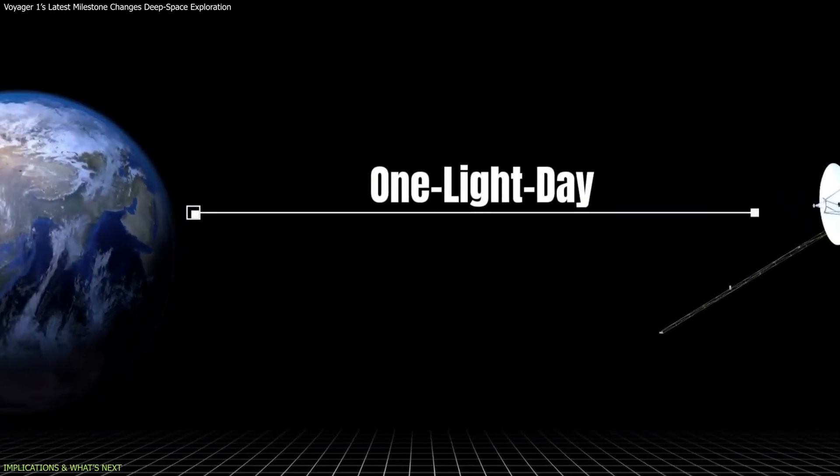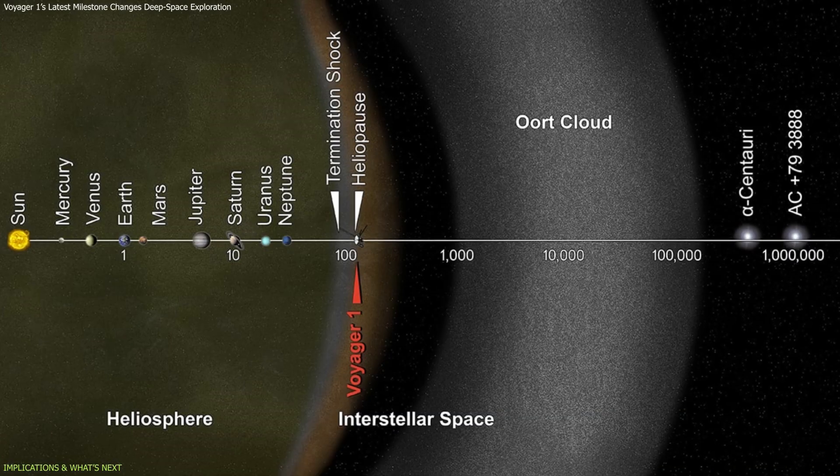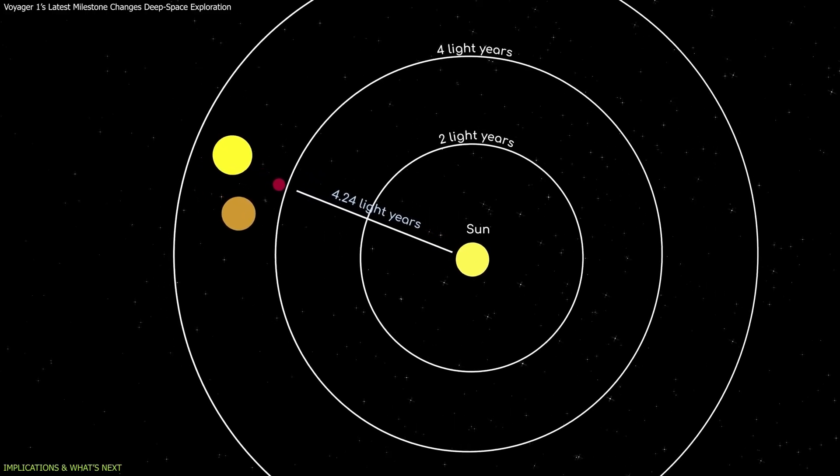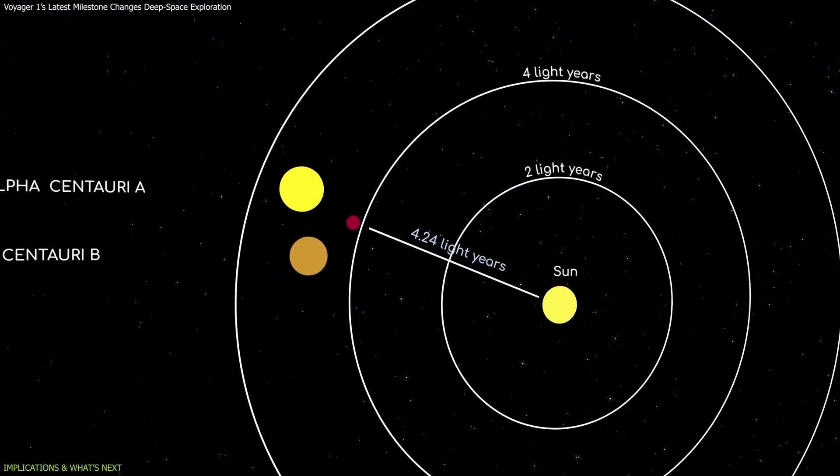Another implication concerns perspective. A light day is an enormous distance in human terms, but it is tiny compared to a light year. Even the nearest star, Proxima Centauri, is more than four light years away.